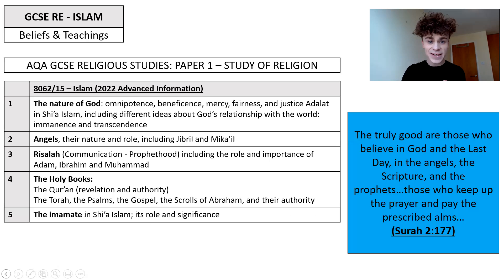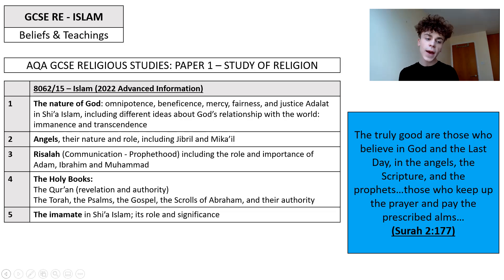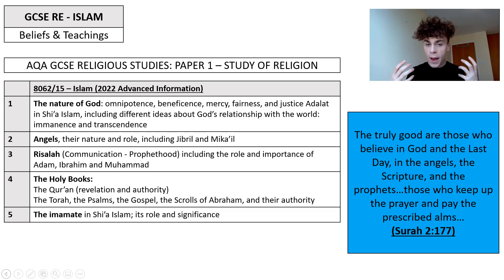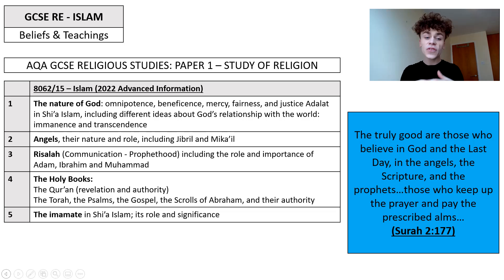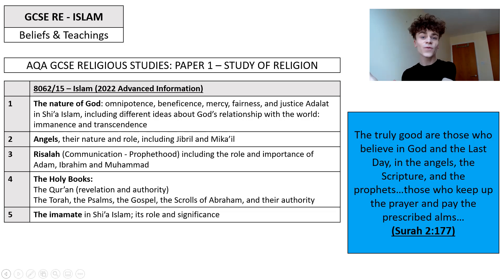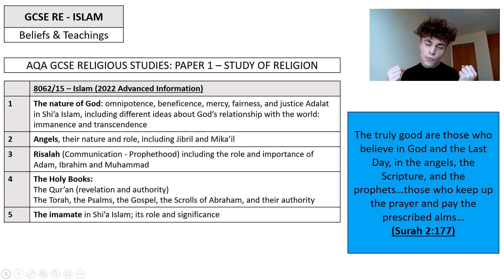Let's get started with the key beliefs and teachings. AQA have told us we are going to be asked about these five key beliefs and teachings: the nature of God, angels, risala — which is communication, in particular prophethood — the holy books, including the Quran and other holy books, and then the imamate. This gives us a very clear idea of the topics we will find when we open that paper, so we can feel confident, prepared, and ready to get that grade eight or nine.